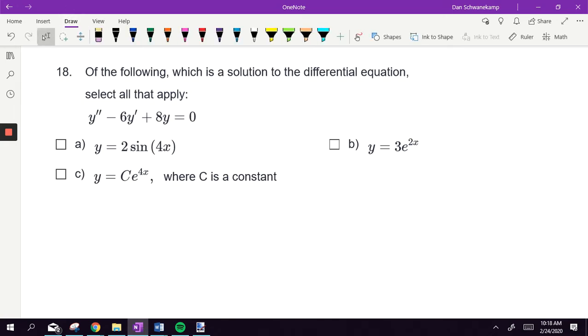So they gave us this right here. This is what needs to be true when I plug in: y double prime minus 6y prime plus 8y needs to be equal to zero. That's our whole goal here. They told us different y's down below. We're just going to try them and see what happens.